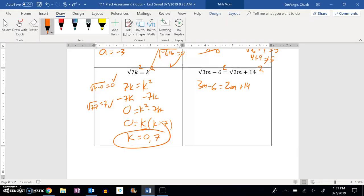I'm going to solve this. So get those m's on the same side. Subtract 2m from both sides. Add that 6. Looks like m is 20.